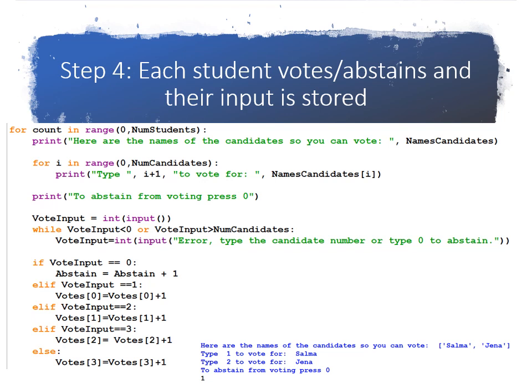Finally, after we've taken the input, the vote input, then we can update our votes array. So if they've input one for the first candidate, votes of zero equals votes of zero plus one. If they input two to vote for the second candidate, votes of one equals votes of one plus one, etc. So this is the for loop that represents the 30 students voting for the candidates.